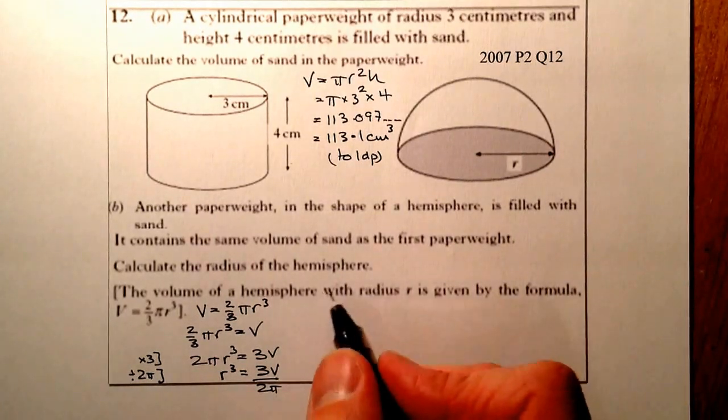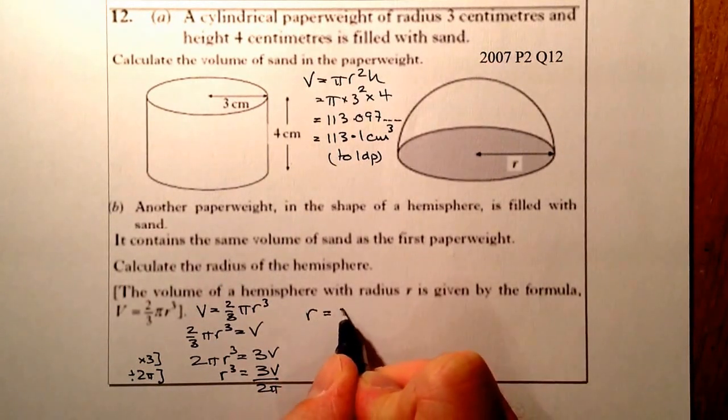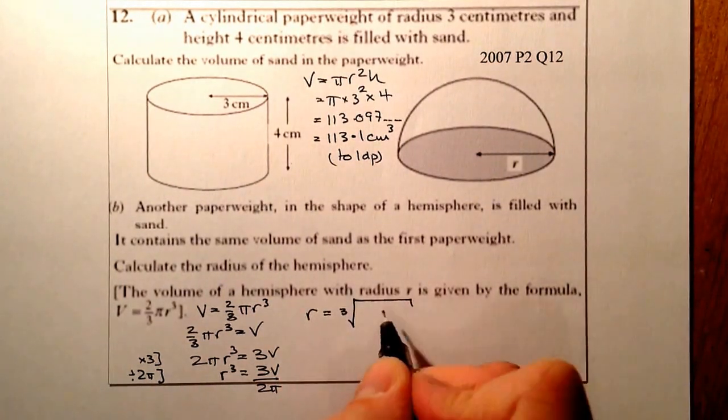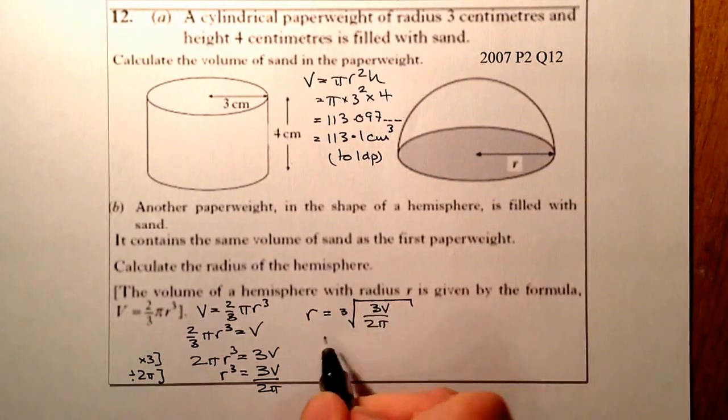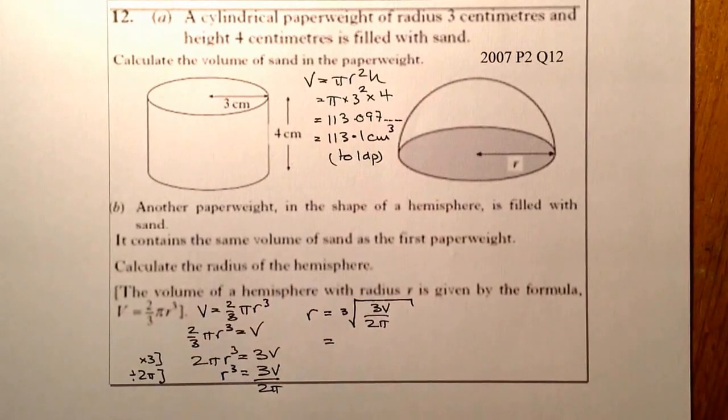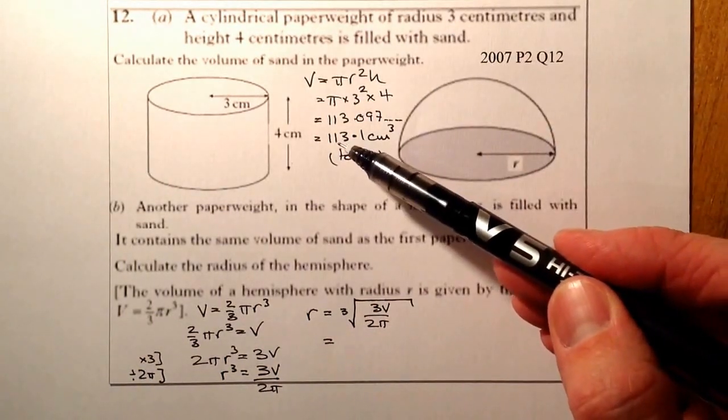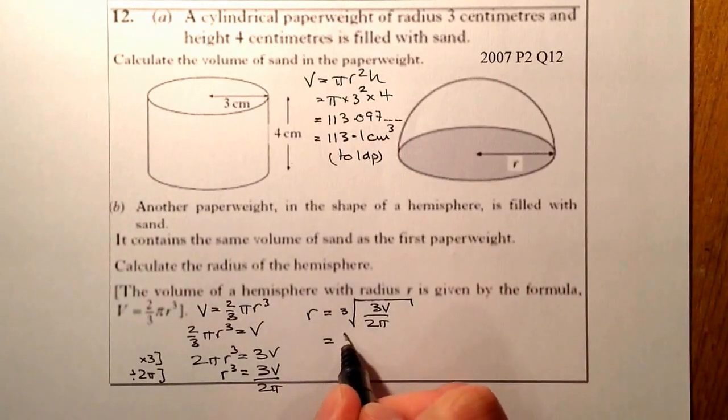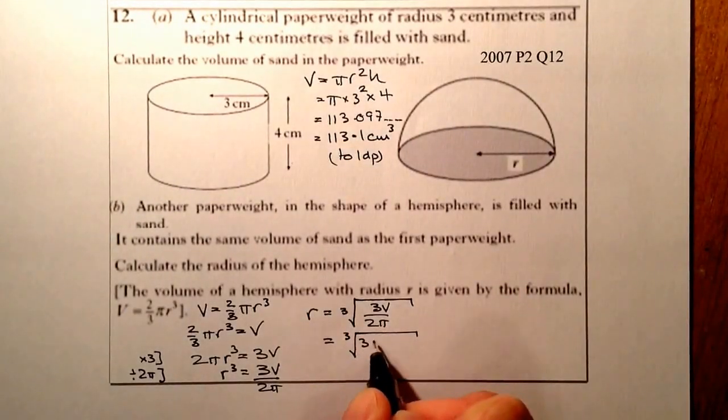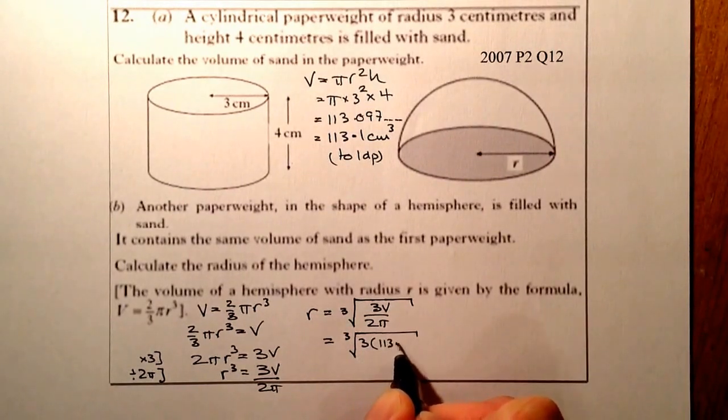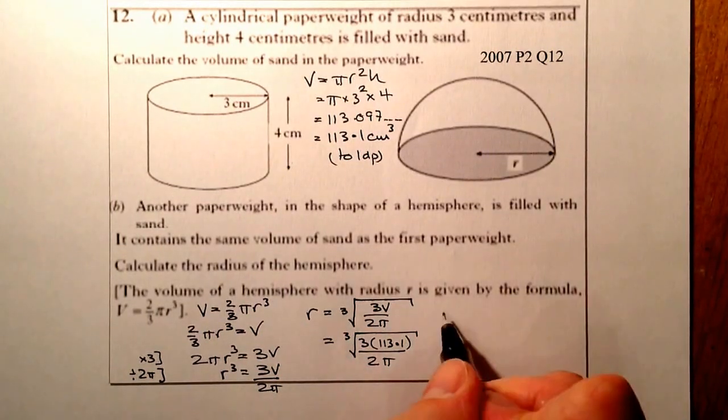From there, I'd have R = ∛(3V/(2π)). Let's substitute some of the values that we know. I know the volume of sand is 113.1. So what I'd be trying to work out is the cubed root of 3 × 113.1 all divided by 2π.